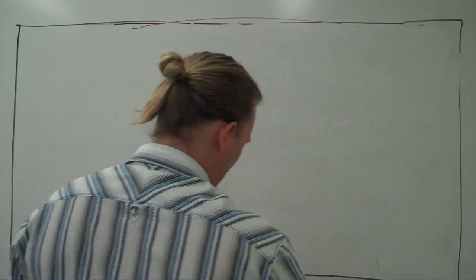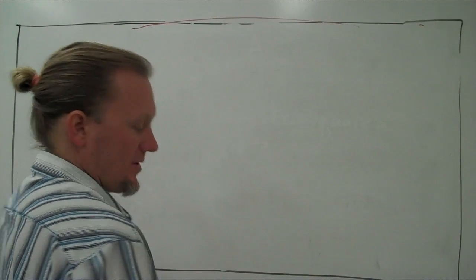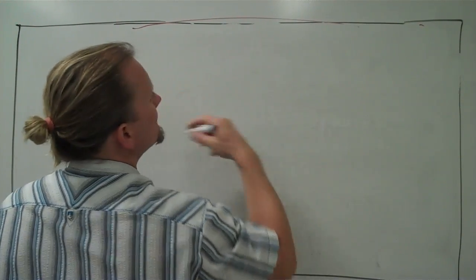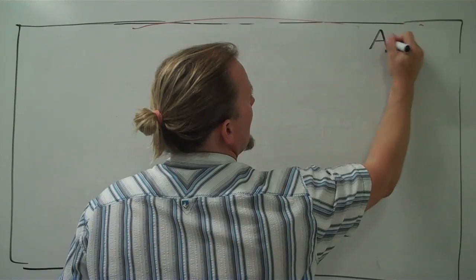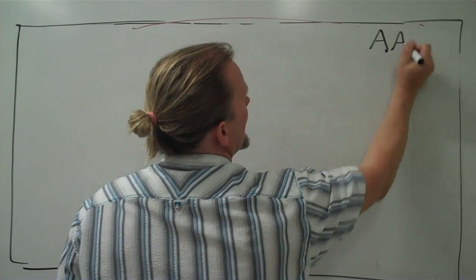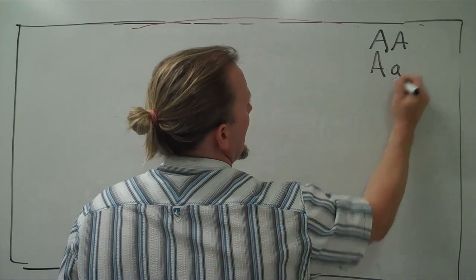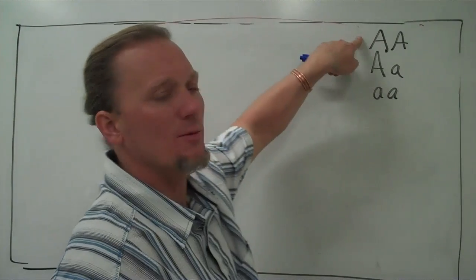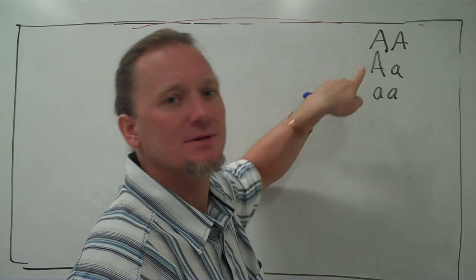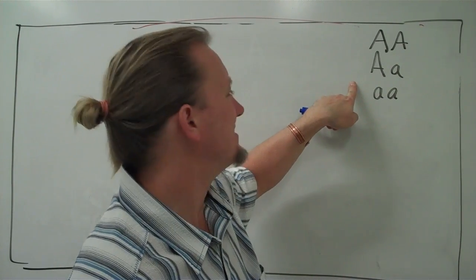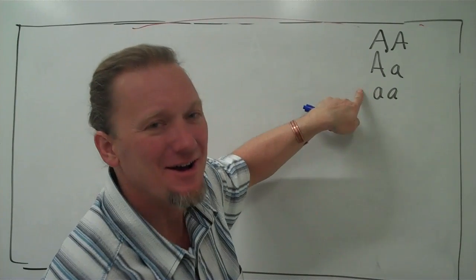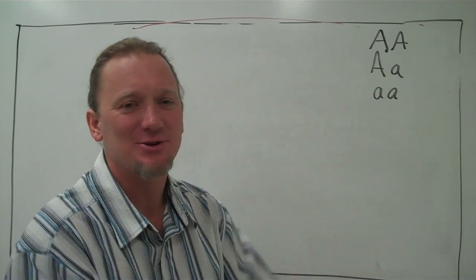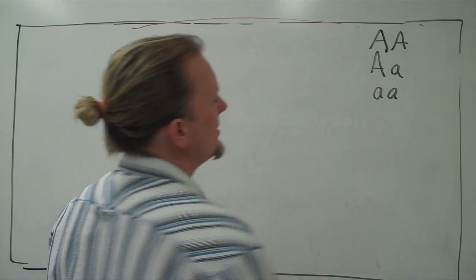To do this, I'm going to return to this terminology: big A big A, big A little a, and little a little a. Practice the terms — homozygous dominant, heterozygous, and homozygous recessive. It's hard to get those, so practice saying them out loud so you'll remember.